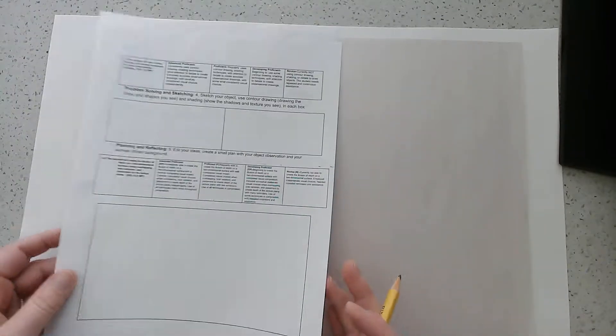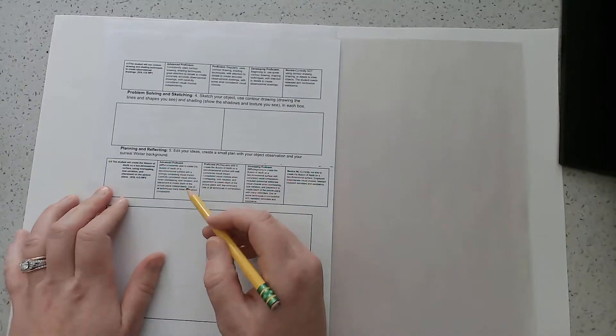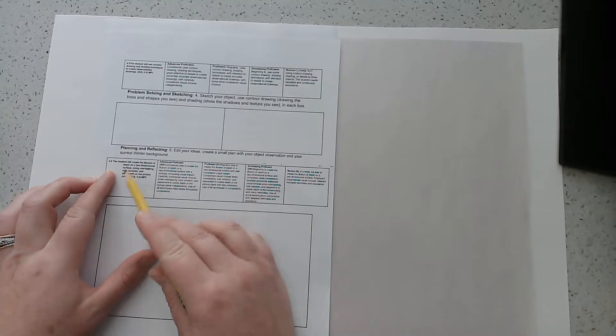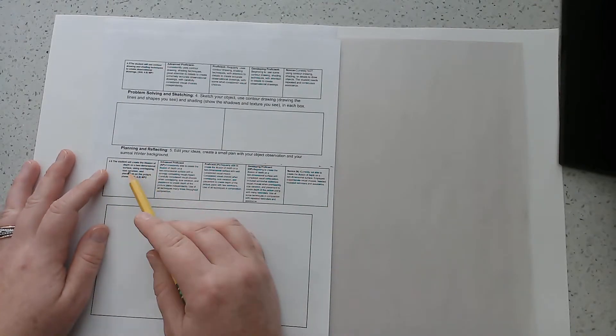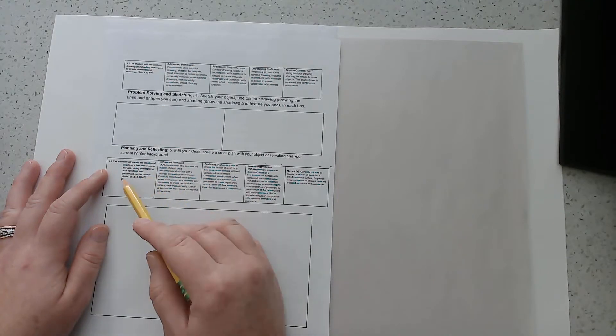In fourth grade, for week 12B, we are going to continue to focus on our planning for our surreal place with the illusion of depth. The objective we'll be looking at is 4.6. The student will create the illusion of depth on a two-dimensional surface using overlapping, size variation, and placement on the picture plane.